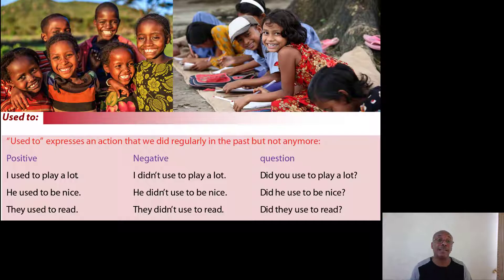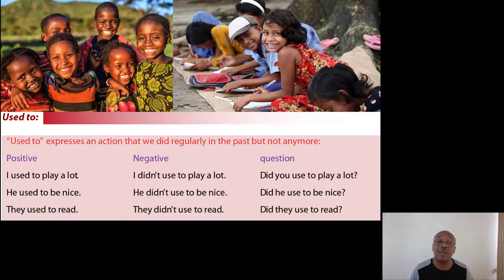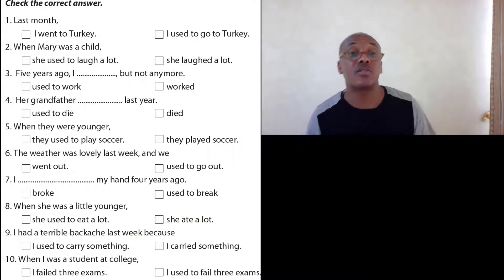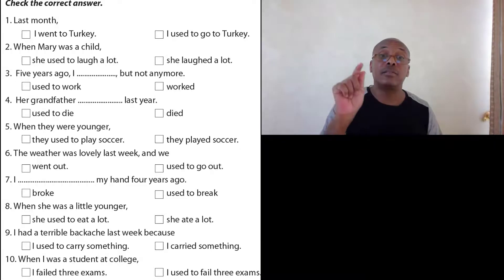Our first grammar focus today is 'used to.' 'Used to' expresses an action that we did regularly in the past, but not anymore. Let's look at the three forms. Positive: 'I used to play a lot.' Negative: 'I didn't use to play a lot.' Question: 'Did you use to play a lot?' Examples: 'He used to be nice / He didn't use to be nice / Did he use to be nice?' and 'They used to read / They didn't use to read / Did they use to read?' Pause the video and do this exercise.